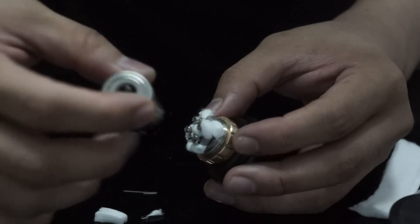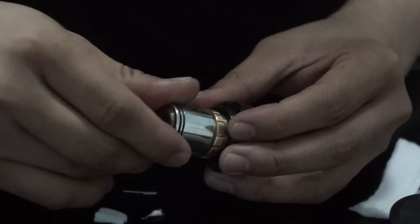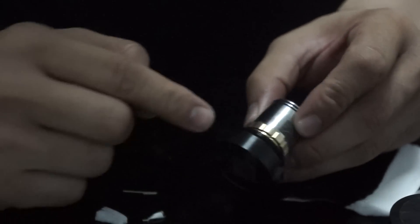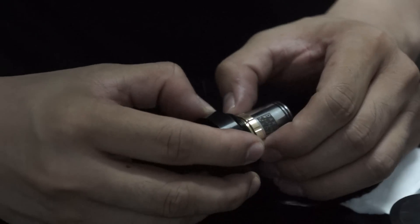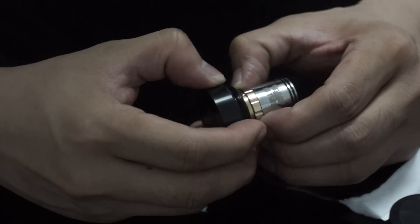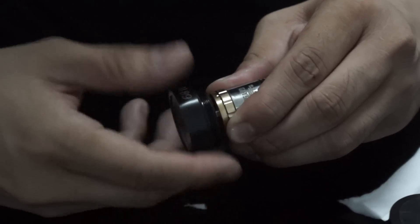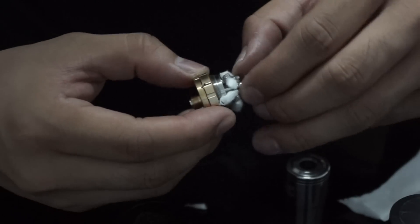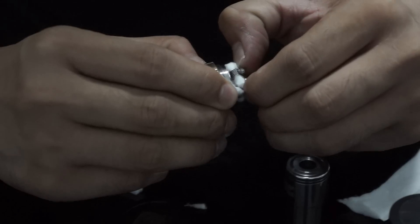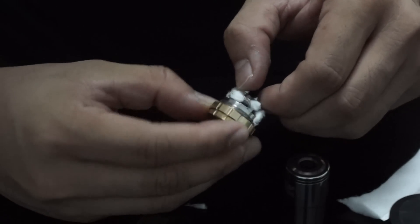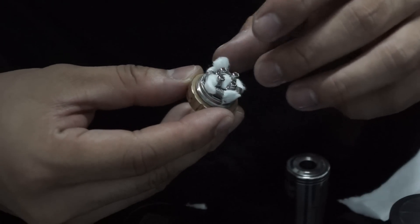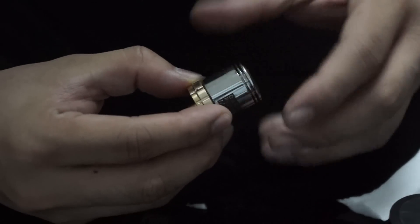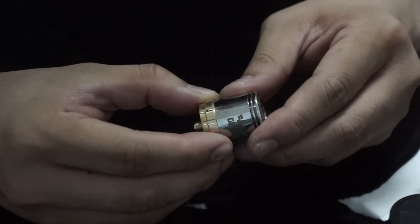Once you close your top cap on, make sure that you've selected the correct airflow settings. So in this case, since I built a quad coil, I'm going to remove it again. Right there. Since I built a quad coil, I'll put it right there. Tighten the top cap on, and I'm good to go.